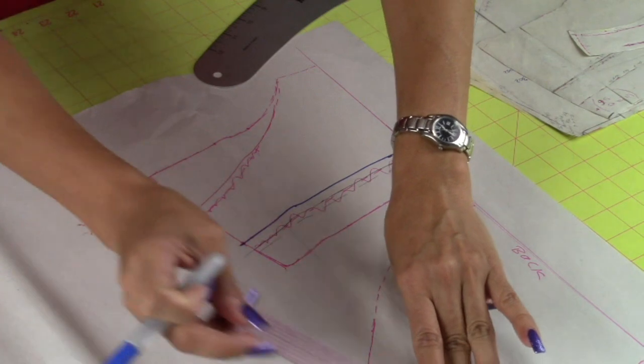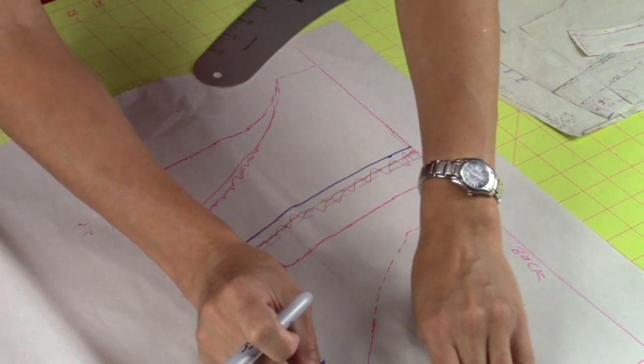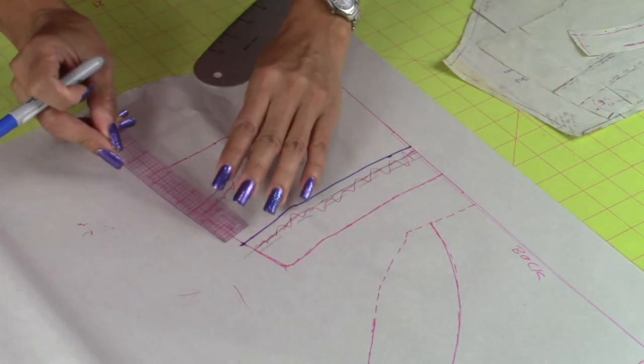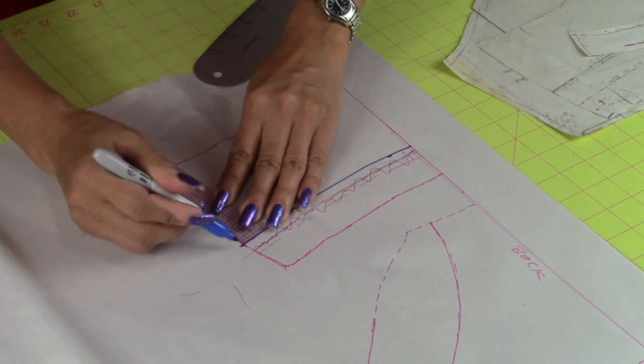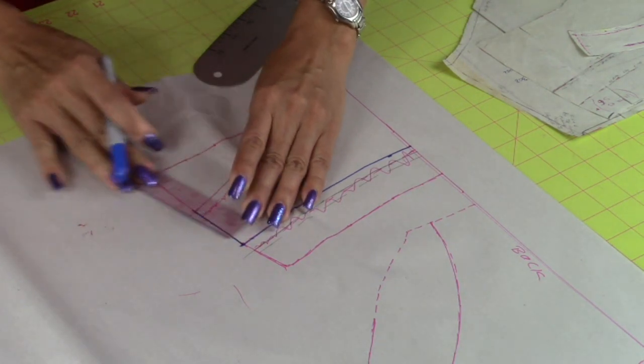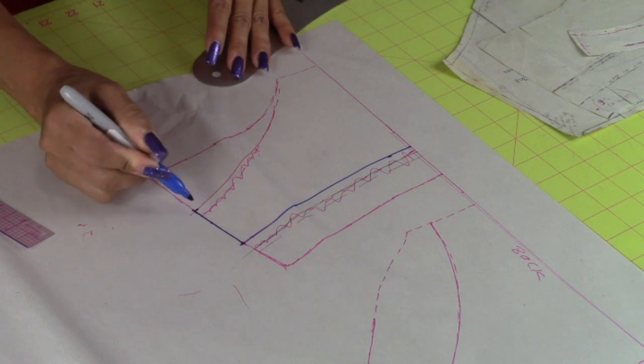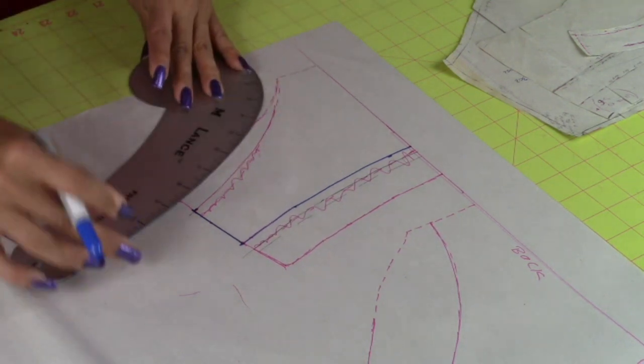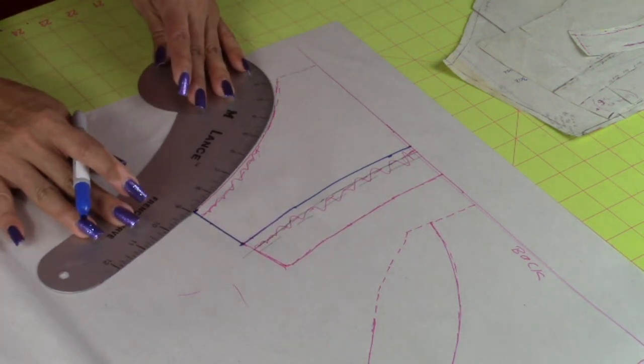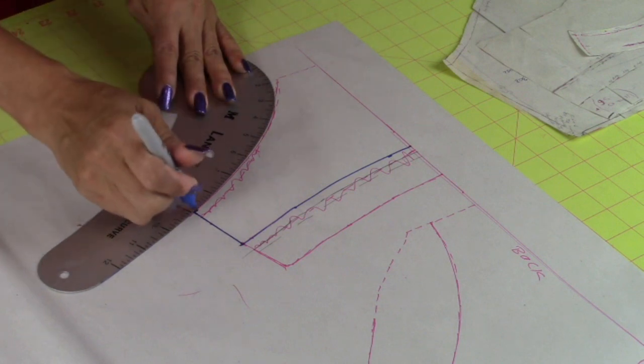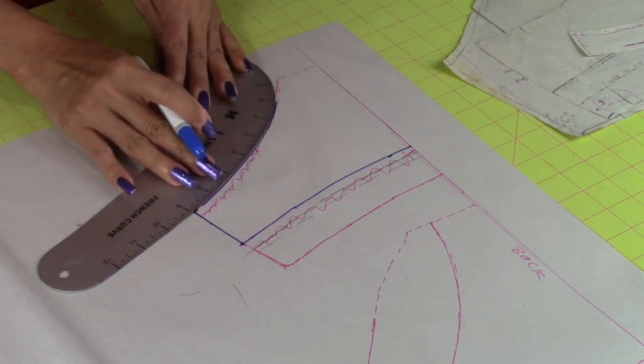Then for the back side seam, we left it at 2 inches. So we are going to leave it at 2 inches. Then we mark it right there. We accommodate our ruler and mark our front leg.